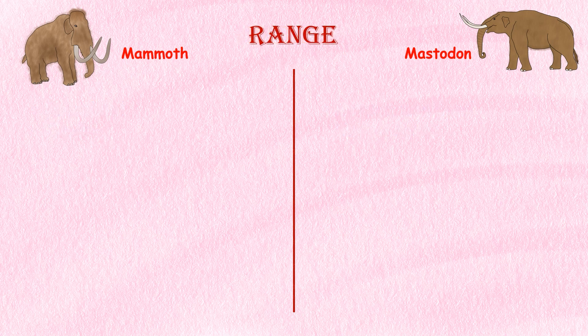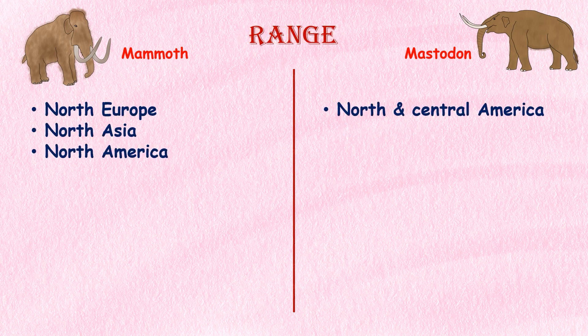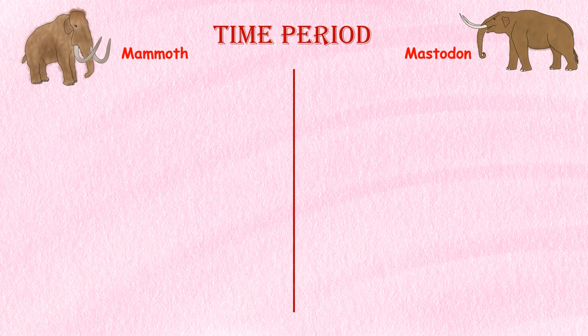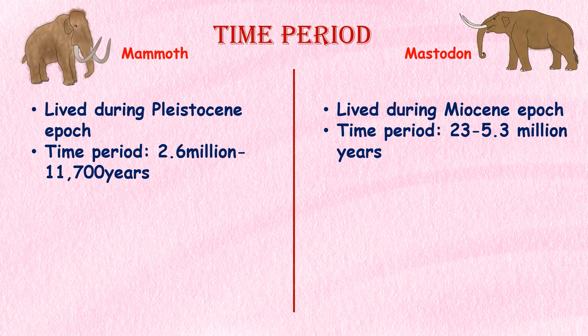Range. Mammoths were mainly found in cold northern regions of the world, such as North Europe, North Asia, and North America. Mastodons, on the other hand, were found in more temperate regions, including parts of North and Central America. Time period. Mammoths lived during the Pleistocene epoch, which lasted from about 2.6 million to 11,700 years ago. Mastodons lived during the Miocene epoch, which lasted from about 23 million to 5.3 million years ago, as well as during the Pleistocene epoch.